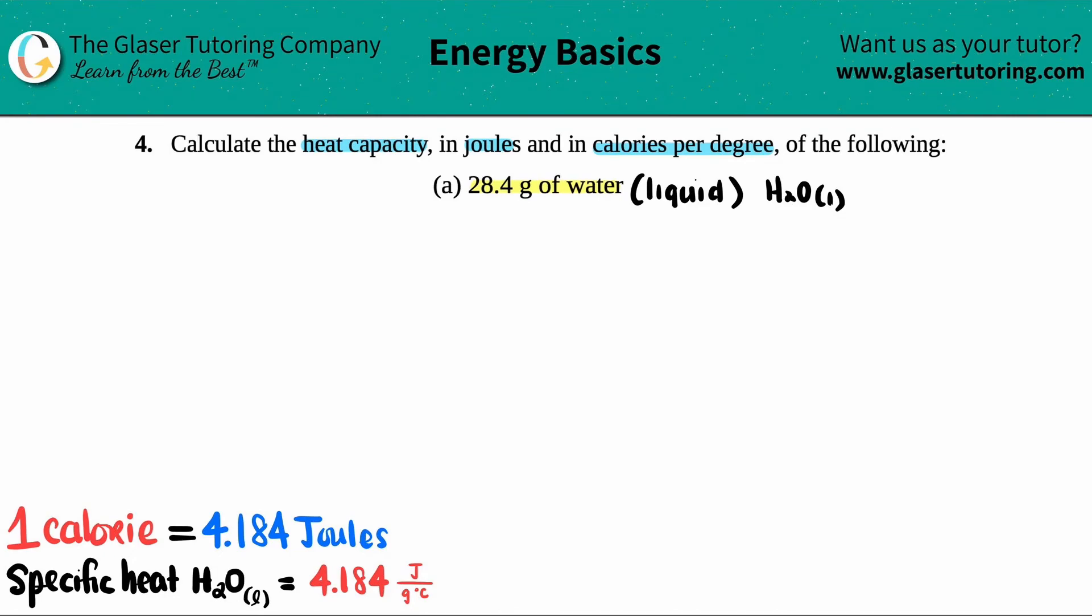You should know that for every one calorie that equates to 4.184 joules, which we will be using later. The more important thing is you probably need to memorize the specific heat of water (liquid water, H2O as a liquid) and that's always 4.184.